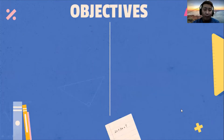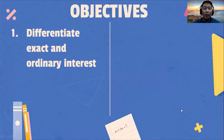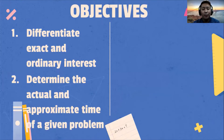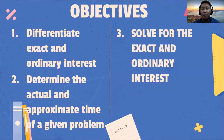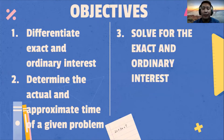What are the objectives of this lesson? Number one, differentiate exact and ordinary interest. Number two, determine the actual and approximate time of a given problem. Number three, solve for the exact and ordinary interest.